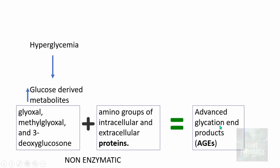AGE formation can occur even in individuals with normal glucose levels, but the amount formed is too small to cause significant damage. However, in hyperglycemia as in diabetes, there are increased levels of glucose-derived metabolites, which non-enzymatically combine to result in increased advanced glycation end products. This is one of the important pathogenetic mechanisms for both microvascular and macrovascular complications in diabetes.